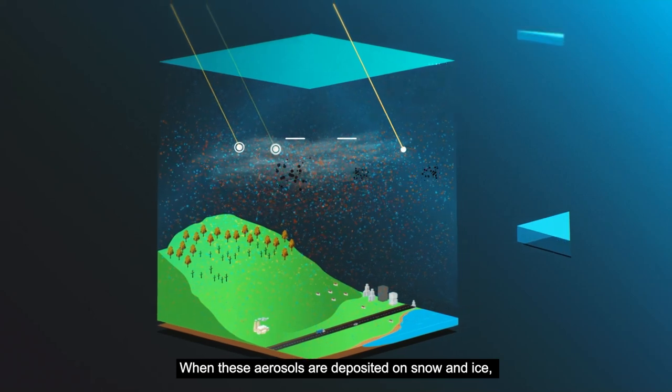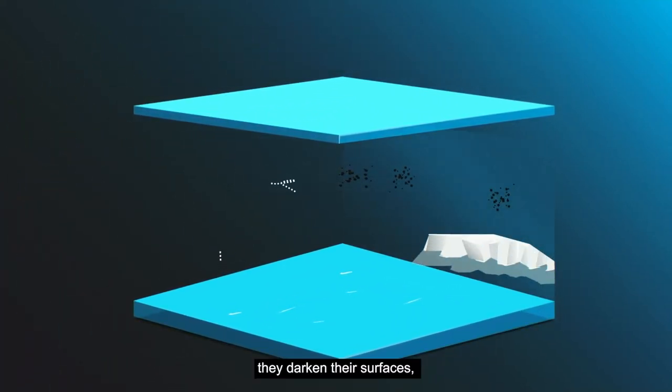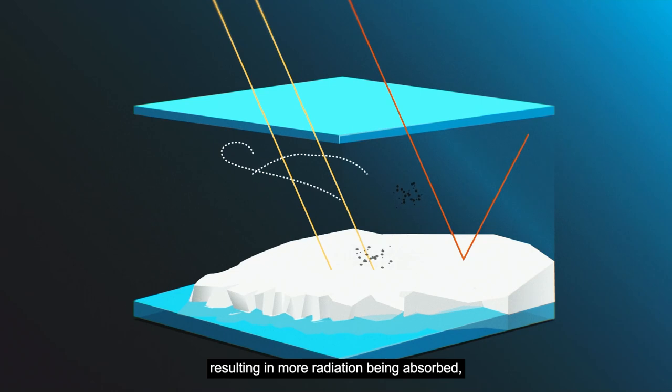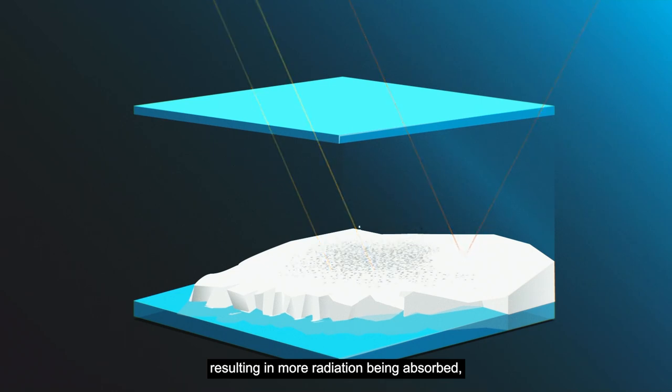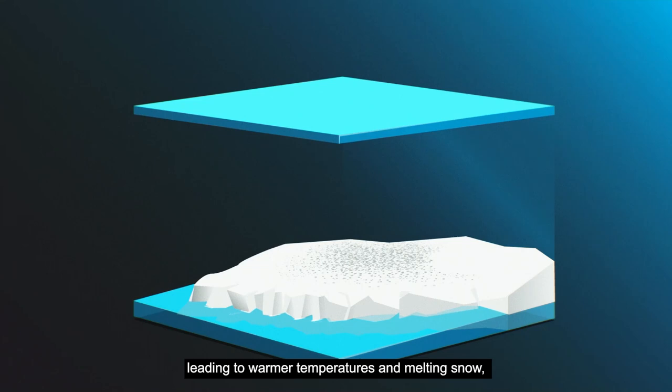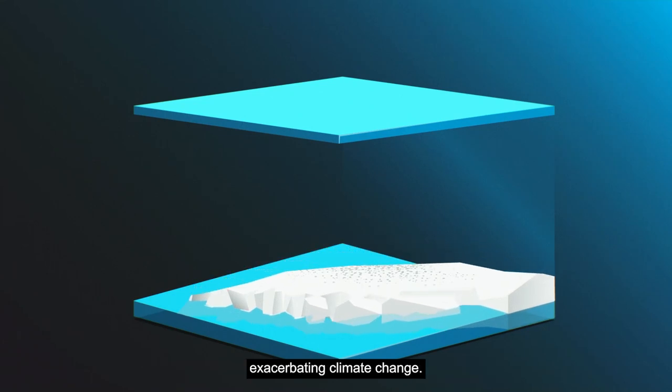When these aerosols are deposited on snow and ice, they darken their surfaces, resulting in more radiation being absorbed, leading to warmer temperatures and melting snow, exacerbating climate change.